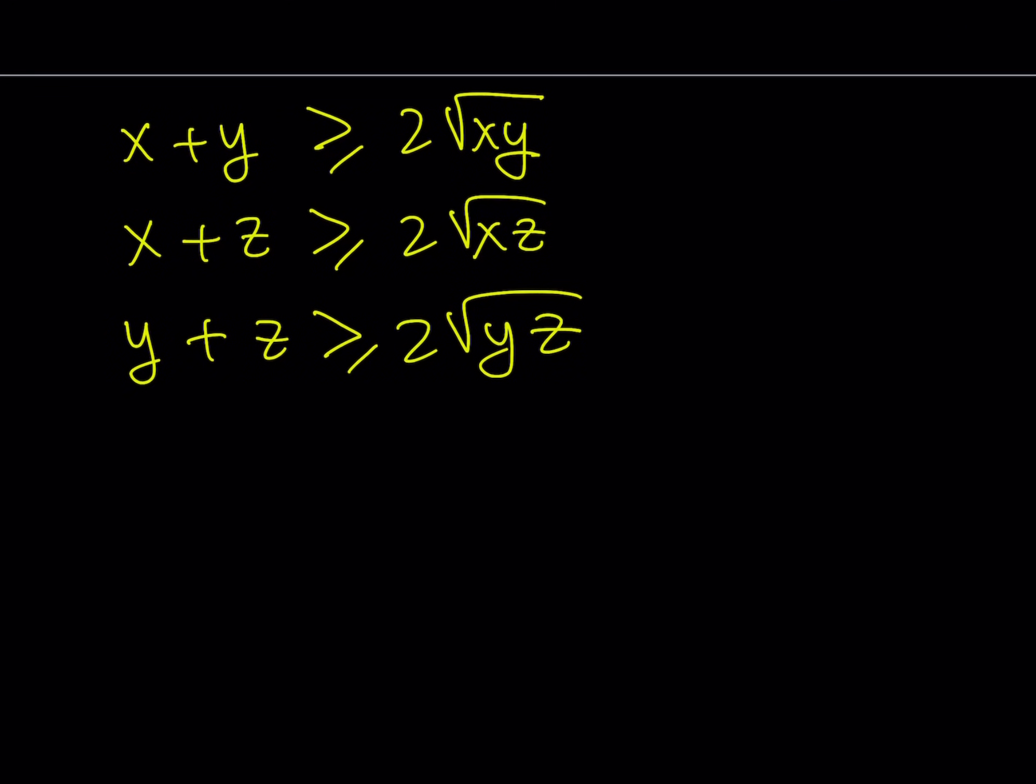Now, what do you notice? If you look at the original problem, on the left-hand side we do have the product of what's on the left-hand side here, right? So that would make sense if you multiply these together. And a good reason we can do that is x, y, z are non-negative, so it's allowed.